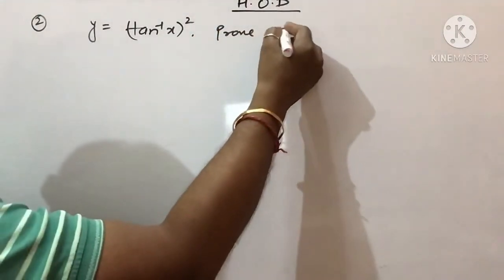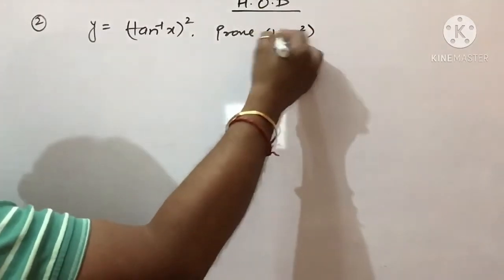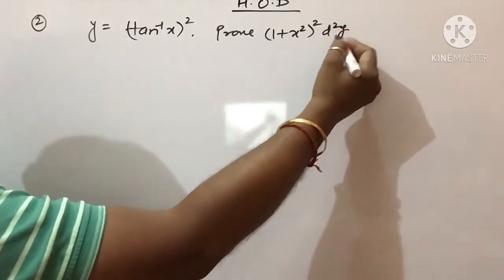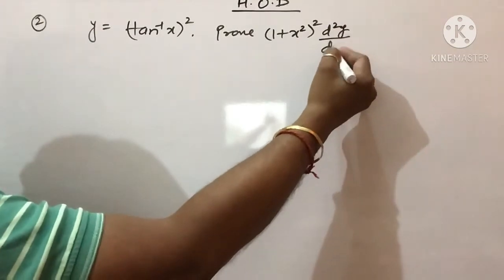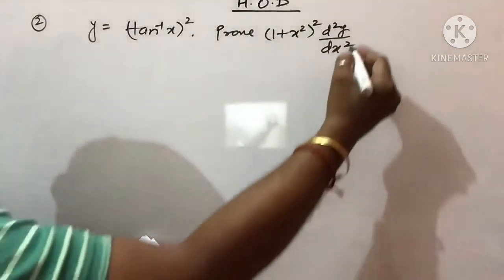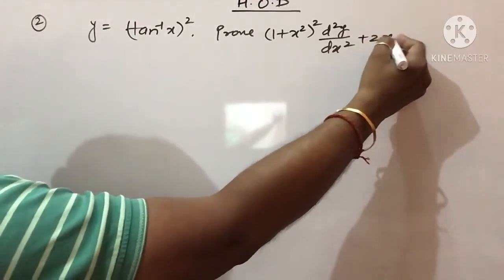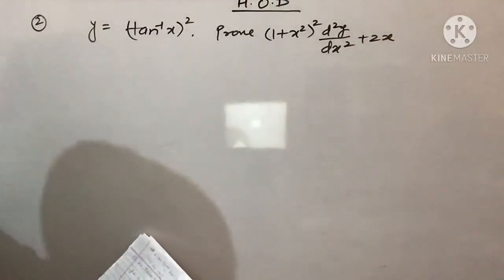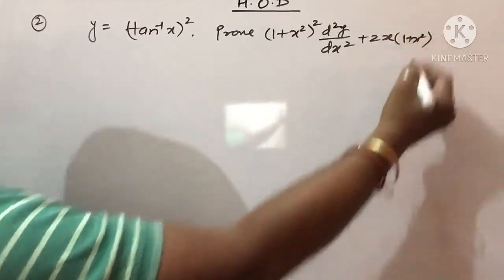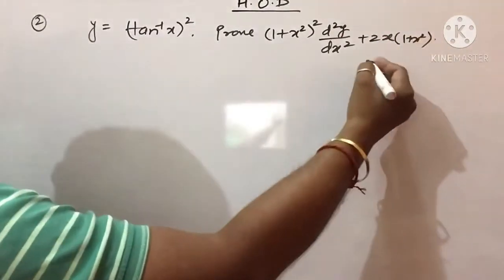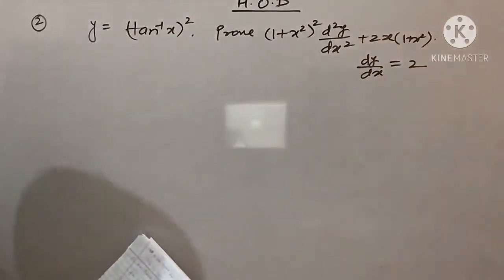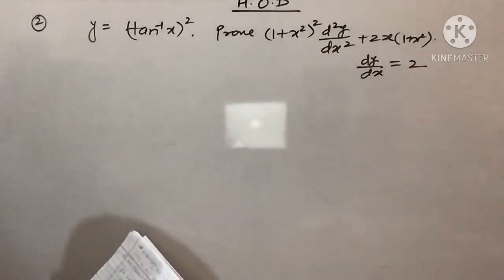Aur aapko proof karna hai: (1 + x²)² · d²y/dx² + 2x(1 + x²) · dy/dx = 2. Ye second question hai aaj ka.